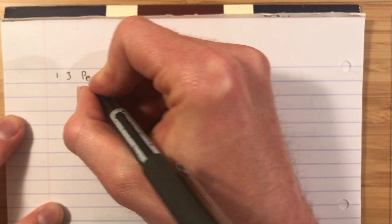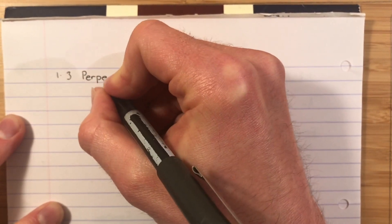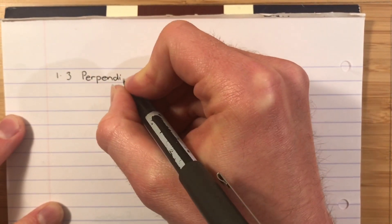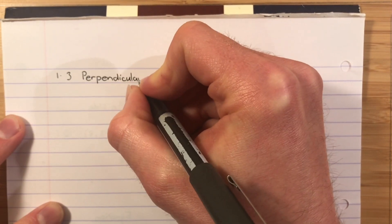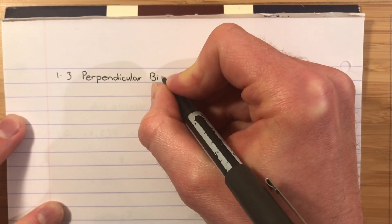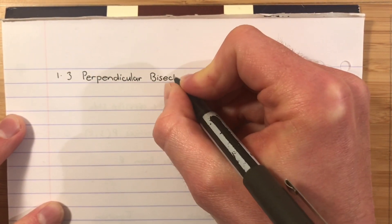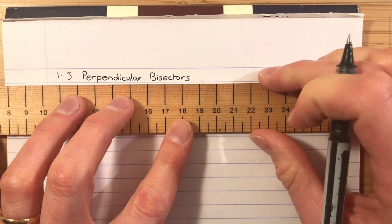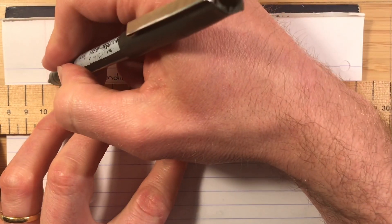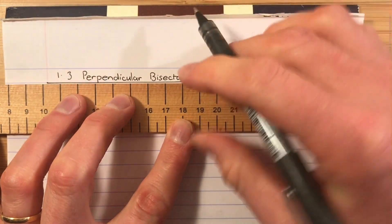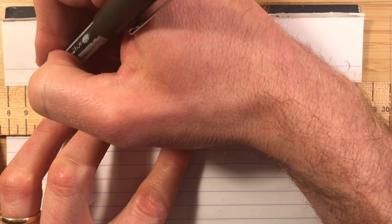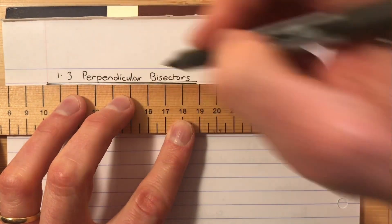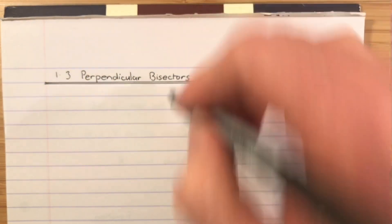So 1.3 is perpendicular bisectors. And as you become comfortable with what those two words mean, you will realize that the name for these lines actually tells you what to do. It tells you to find the perpendicular gradient and it tells you to bisect, which means find the midpoint.